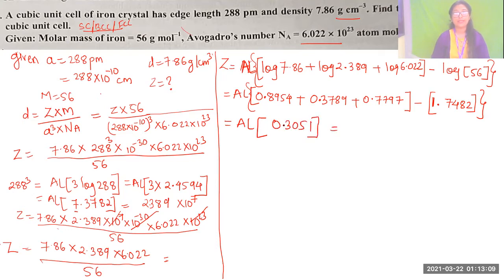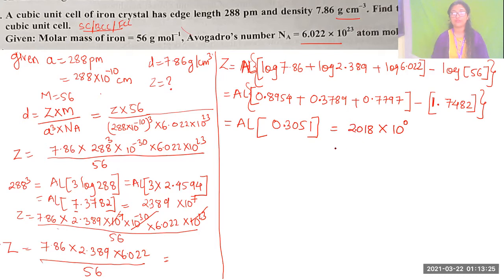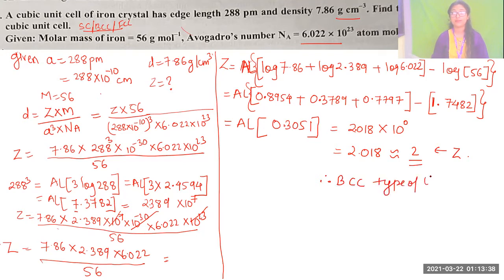Anti-log of 0.3051: characteristic is 0, so it is × 10⁰ = 1. From anti-log table, 0.30 with mean difference 5 and 1 gives 2018. So the answer is 2.018, which rounds to Z = 2. Since Z = 2, the unit cell is BCC type. This is clear to all of you.